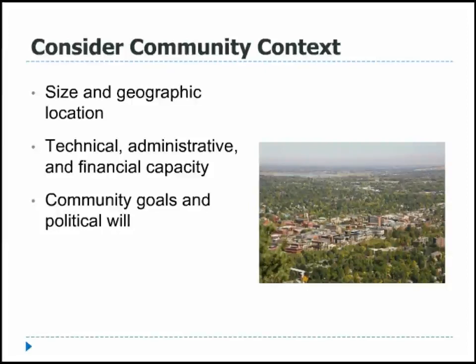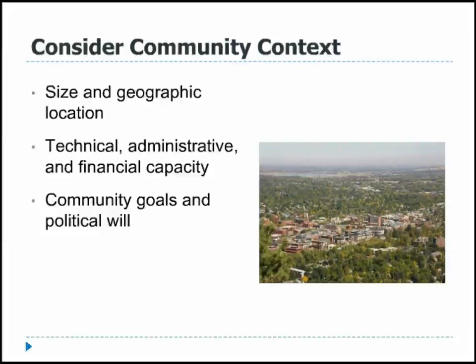We were really aware of thinking about community context. Colorado has a very large urban mega-region all the way from Fort Collins in the north down to Pueblo in the south, and then a large part of the state is more rural, small-town communities. When we think about planning for hazards, we're trying to think about the whole state — not just the Denvers and the Boulders, but also the Grand Junctions and the Pagosa Springs. We tried to take into account different types of communities, their size, geographic location, capacities, and especially community goals and political will.